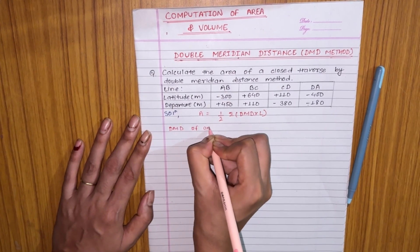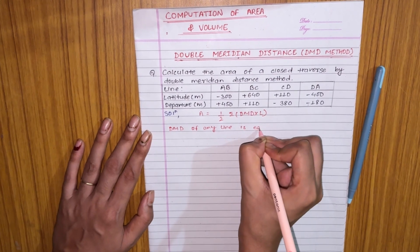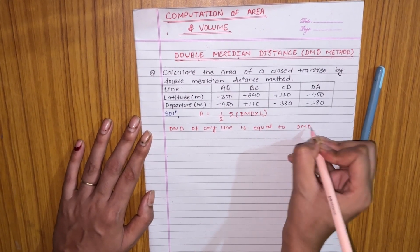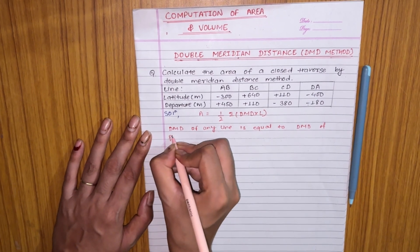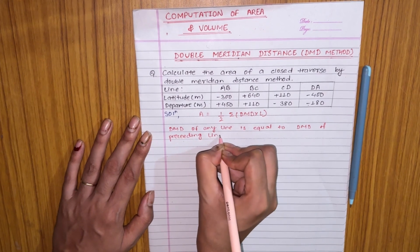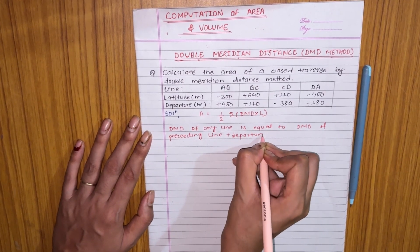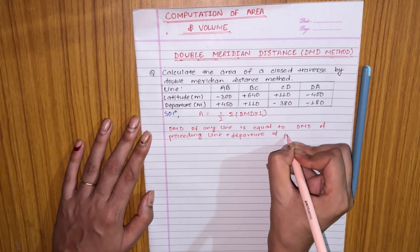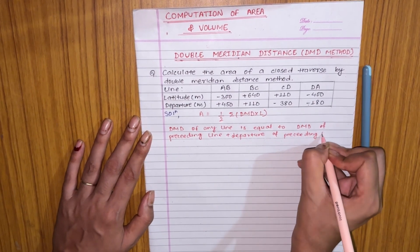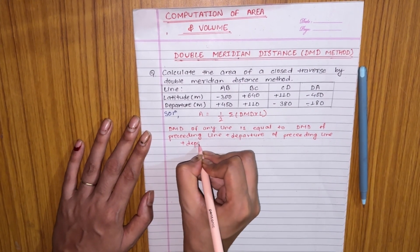The DMD of any line is equal to the DMD of the preceding line, plus the departure of the preceding line, plus the departure of the line itself.